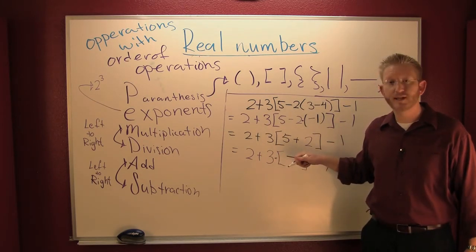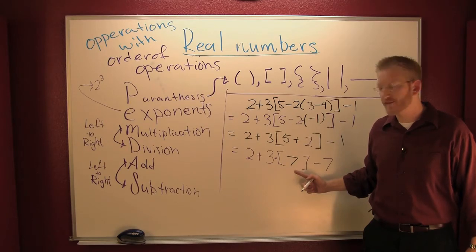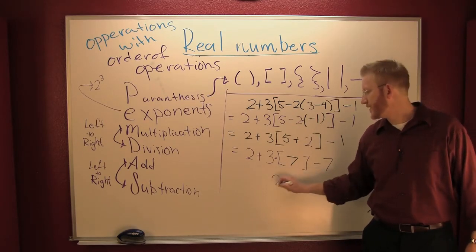So then I move out. Do I have any multiplication? Yes! Three times seven gets you? Twenty-one.